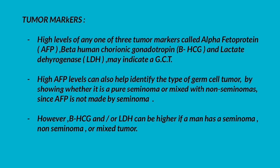Seminoma also produces placental alkaline phosphatase. Regarding tumor markers: high levels of alpha-fetoprotein, beta-human chorionic gonadotropin (beta-HCG), or lactate dehydrogenase (LDH) may indicate a germ cell tumor. High alpha-fetoprotein levels can help identify whether a tumor is a pure seminoma or mixed with non-seminomas, since alpha-fetoprotein is not made by seminoma. However, beta-HCG and/or LDH can be elevated with seminoma, non-seminoma, or mixed tumor.